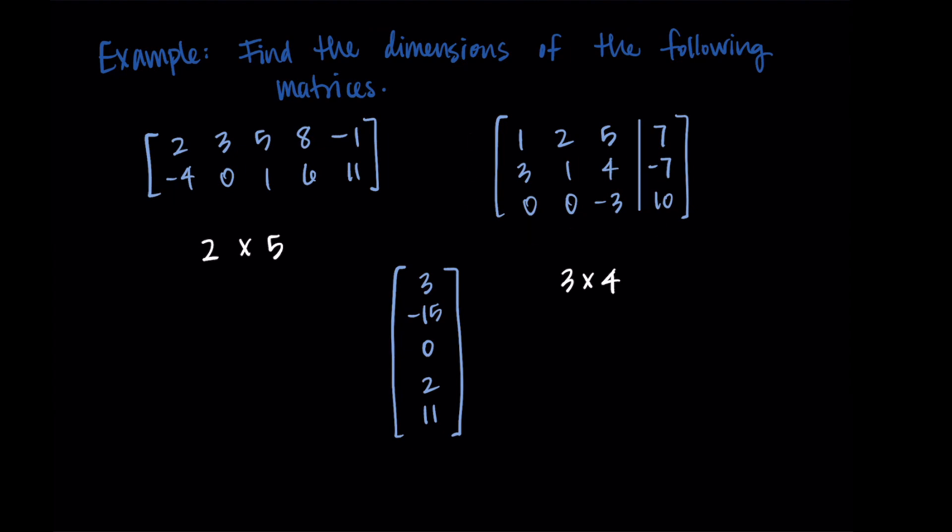Then lastly, this matrix is just a single column. It has five rows and one column. So it's a five by one matrix.